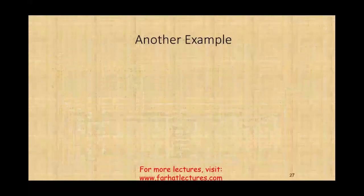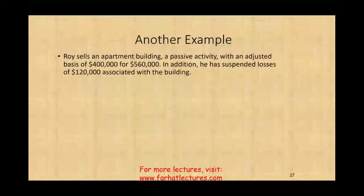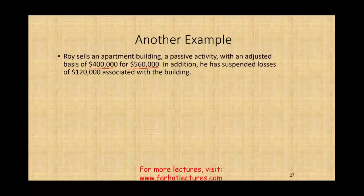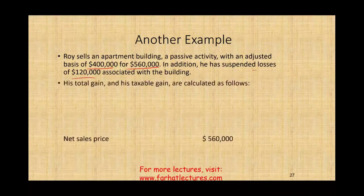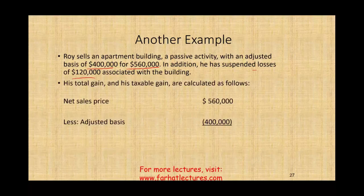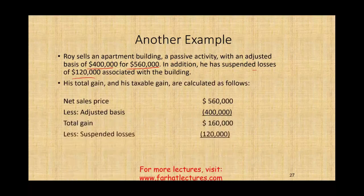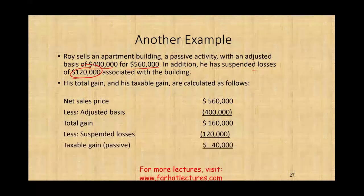Example: Roy sells an apartment building — a passive activity — with an adjusted basis of $400,000 for $560,000, giving a gain of $160,000. He has suspended losses of $120,000, which reduce the gain, leaving a net taxable gain of $40,000.